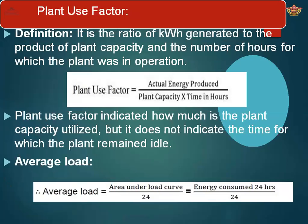Plant use factor indicates how much plant capacity is utilized, but it does not indicate the time for which the plant remained idle. Average load is the area under the load curve divided by 24 hours. The total fluctuations across the day — the area under the load curve — divided by 24 gives the energy consumption over 24 hours, which is the average load.